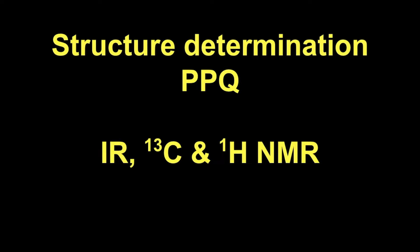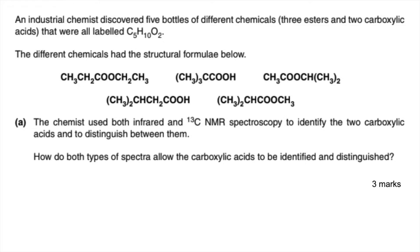I've got an old spec structure determination question here, which deals with infrared, carbon-13 and proton NMR. So if you want to have a go, you're going to need a data sheet. If you have that handy, you'll need that for the question. So it's in two parts. Here's part A for three marks. If you want to have a look at that, pause the video and then play on when you're ready for the answer.